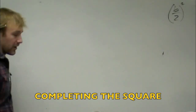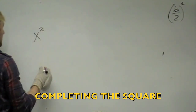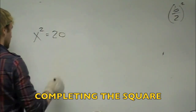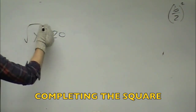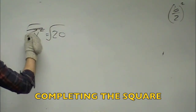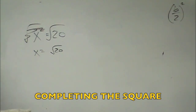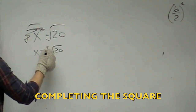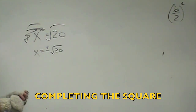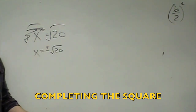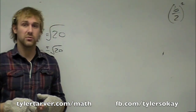First thing you need to know is the square root property, which essentially means, say you've got x squared equals 20. What you want to do is get the square root of that, so you take the square root on both sides, because that cancels out the square, and x would equal radical 20. Now, this says that can be plus or minus 20, because if you've got x squared, we're essentially saying what times itself equals 20. Well, not only could it be the positive version of that, it could also be the negative version.